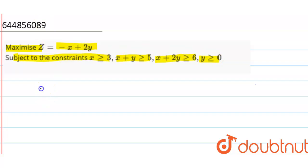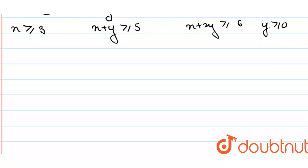You are given that z equals minus x plus 2y and the equations are: x is greater than or equal to 3, x plus y is greater than or equal to 5, x plus 2y is greater than or equal to 6, and y is greater than or equal to 0.